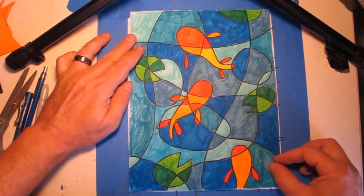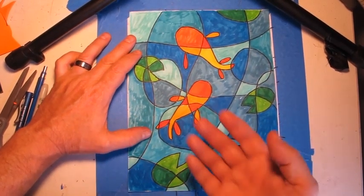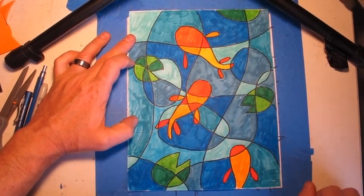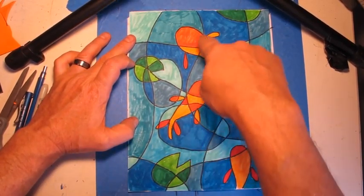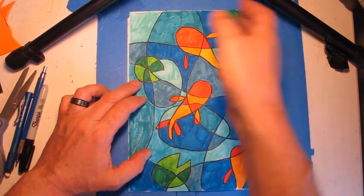But the point is to make a design, an abstract design, showing warm and cool colors working together. So the fish really stand out from the cool colors because they are warm colors. They're orange, red, and yellows. And the background is cool colors, greens and blues.